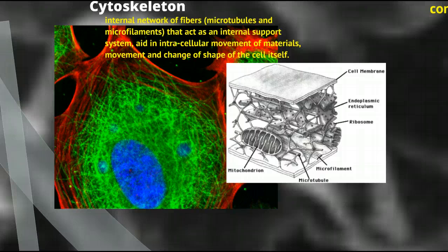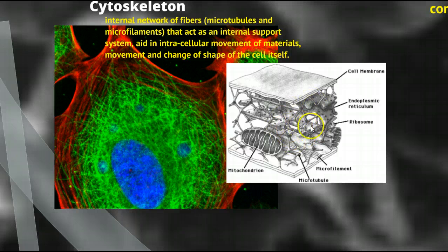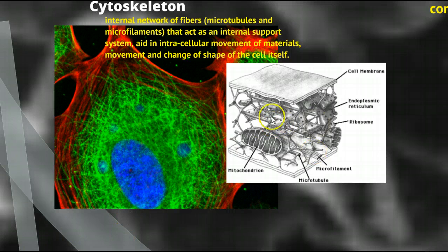Then we move on to the cytoskeleton. They provide a very important function for the cell. This photograph uses special techniques to highlight cytoskeletal elements, showing how complex this system of protein microtubules and microfilaments are dispersed throughout the cell. The cytoskeleton provides structure, gives organelles a place to attach, provides pathways or guide wires for things moving through the cell, and is also involved in changes of cellular shape.